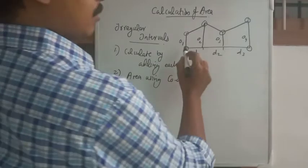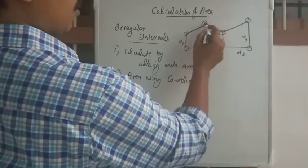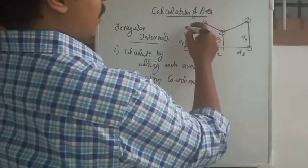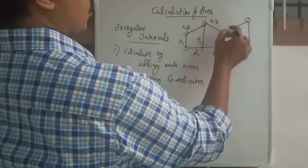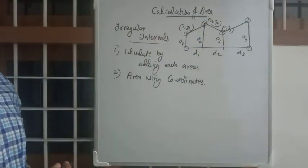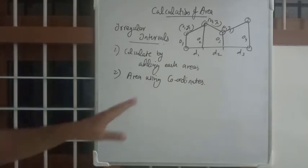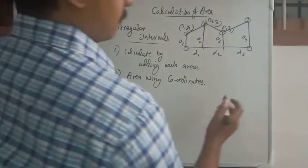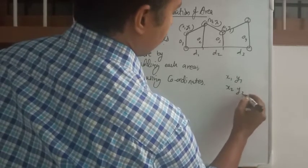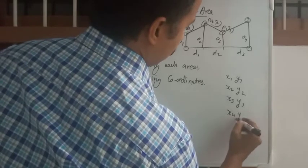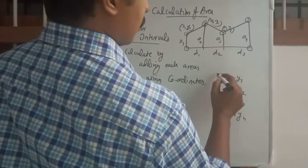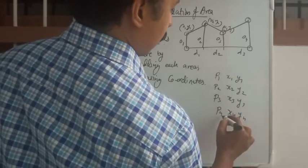First, we calculate the coordinates of all the points. We need the coordinates of all these points — and as the number of divisions increases, so do the number of points. We label them as x1,y1 then x2,y2 then x3,y3 and so on. Suppose we have four coordinates: x1,y1 — x2,y2 — x3,y3 — x4,y4, giving us four points: point 1, point 2, point 3, and point 4.